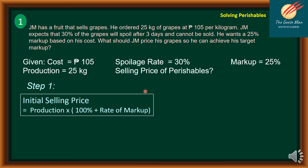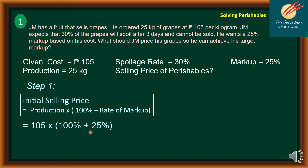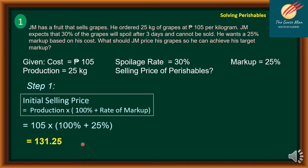Step 1: Find the initial selling price. Since the markup is based on cost, the initial selling price equals production cost times (100% plus the rate of markup). So that is 105 times 125%, which gives us an initial selling price of 131.25 pesos. This means from an initial cost of 105 pesos, you would sell at 131.25 pesos — provided you can sell all 25 kilograms.